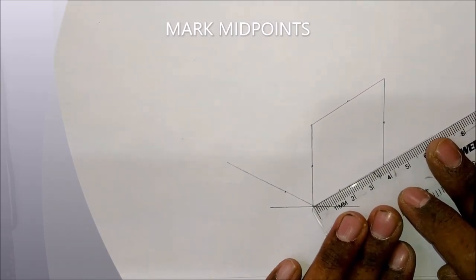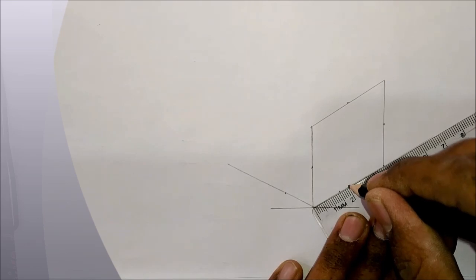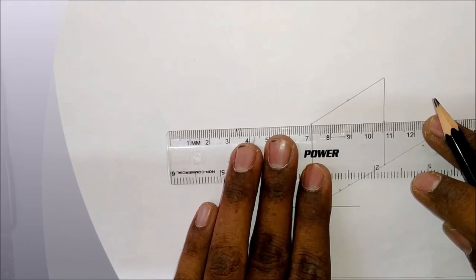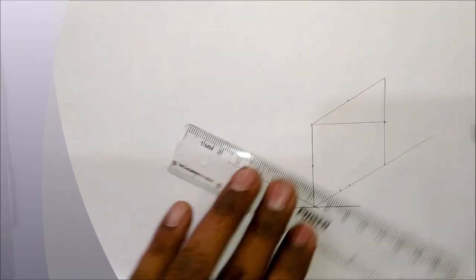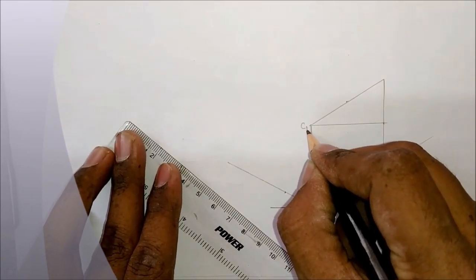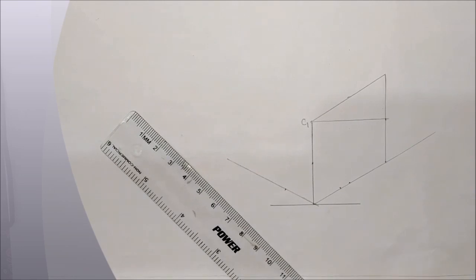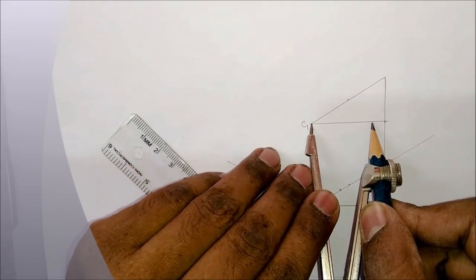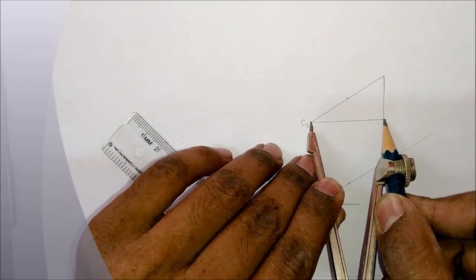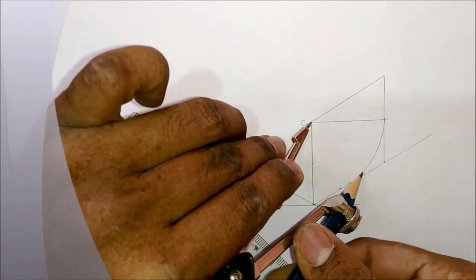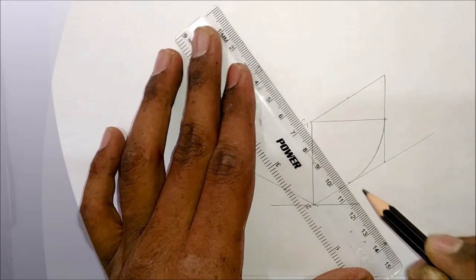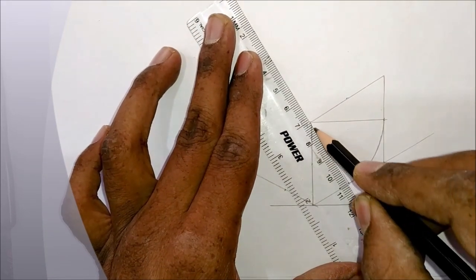We will choose the shortest diagonal first. And from that shortest diagonal we will connect the opposite side midpoint. So we will take a radius from C1 to the opposite side and we will mark one arc. This is the half portion of the semicircle.